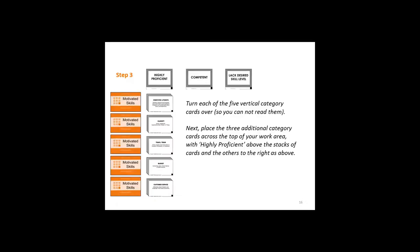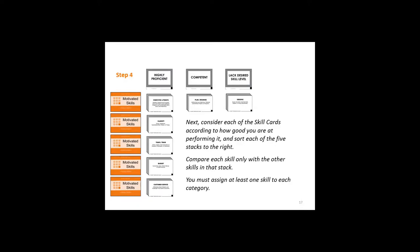I then change the rules. I ask them to take the five category cards with the black background and turn those over so they can no longer see the name of the category. And I ask them to place the five cards with a gray border on the horizontal dimension at the top — placing the 'highly proficient' category card right above their five stacks, 'competent' to the right of that, and 'lack the desired skill level' to the right of that. Then I ask them to take the first stack of cards and sort that to the right according to how good they are at it, making sure they have at least one card in each cell.